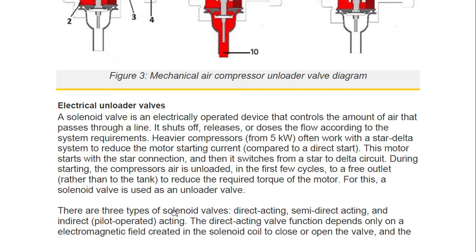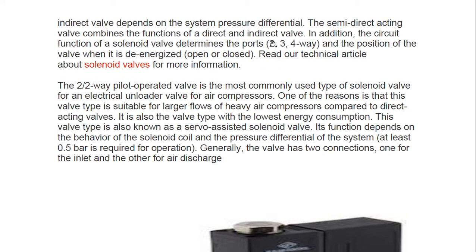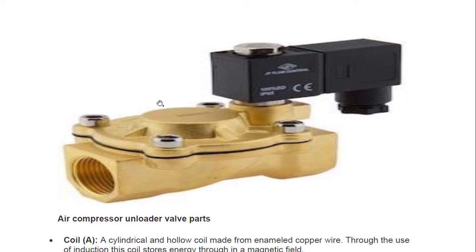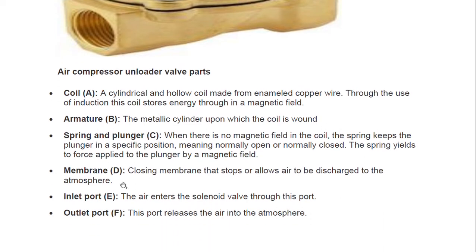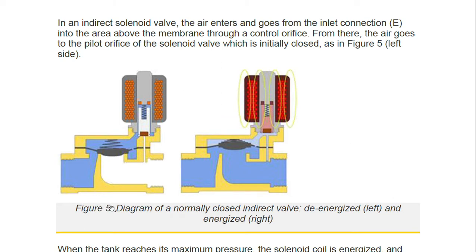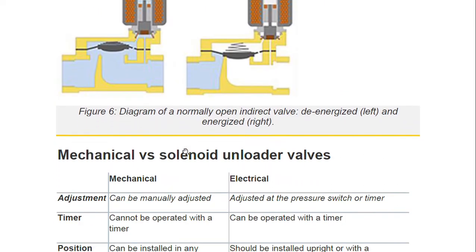There are three types of solenoid valves: direct acting, semi-direct acting, and indirect (pilot operated). The direct acting valve depends only on the electromagnetic field in the solenoid coil to open or close. The indirect valve depends on system differential pressure. The semi-direct acting valve combines both functions. The components include coil, armature, spring, plunger, membrane, inlet port, and outlet port.